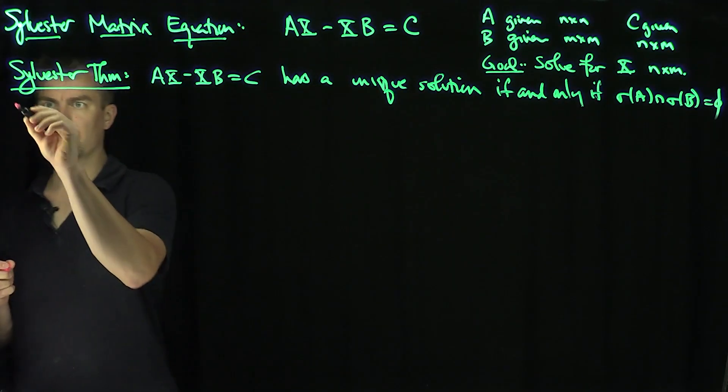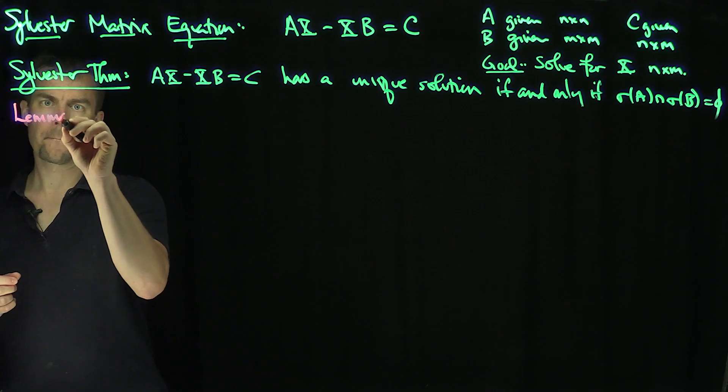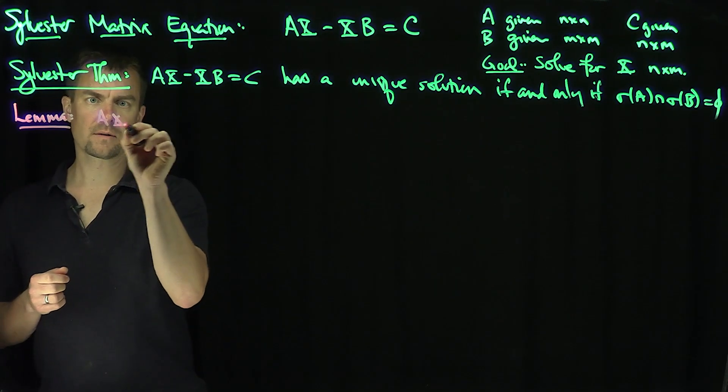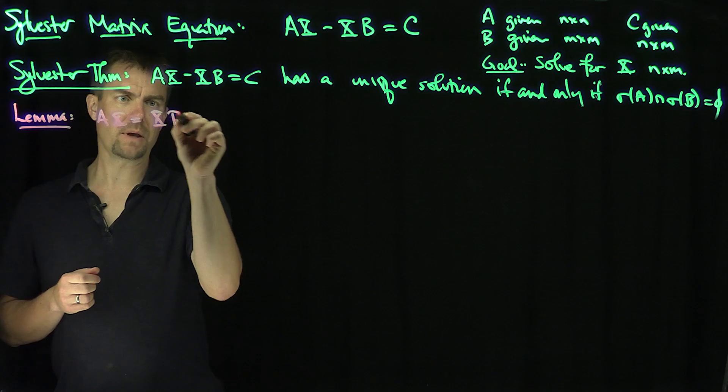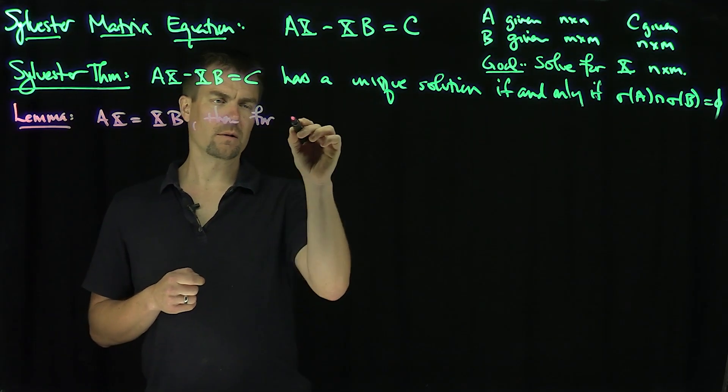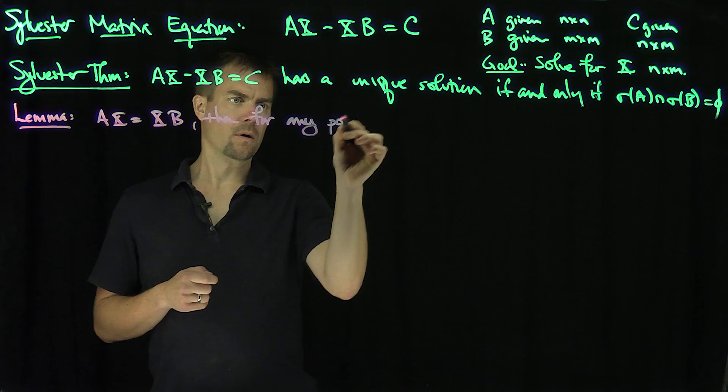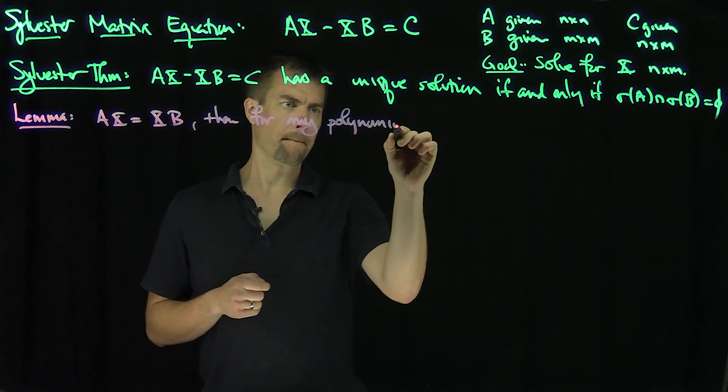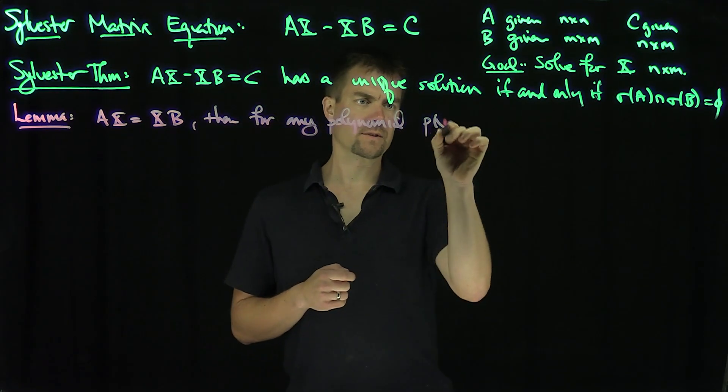Here's our lemma. If AX equals XB, then for any polynomial p of x,